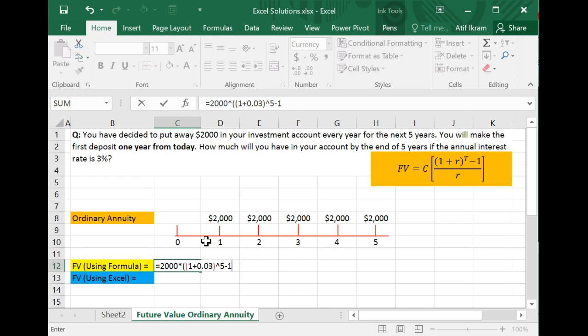All of this stuff in the bracket is just 1 plus r raised to the power t minus 1. I first need to multiply it by C, which I am, and then I'll take this whole expression so I'll close this, which means I need to start one more bracket over here.